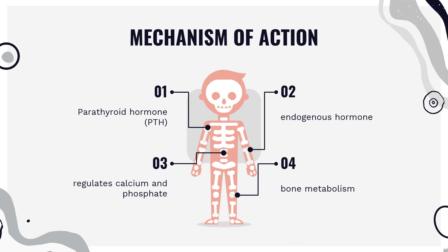Mechanism of Action. Parathyroid hormone (PTH) is an endogenous hormone that regulates calcium and phosphate metabolism in bone and kidney. It regulates bone metabolism, renal tubular reabsorption of calcium and phosphate, and intestinal calcium absorption. It mediates its biological actions by binding to the PTH receptors. Excess PTH, such as in certain disease states like hyperparathyroidism, can cause increased osteoclast activity and accelerated bone resorption. Interestingly, the effects of PTH depend on the dose and pattern of exposure.